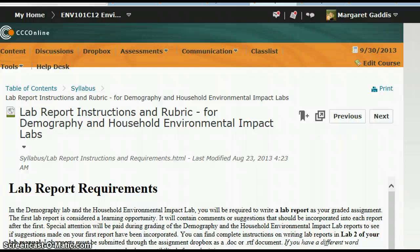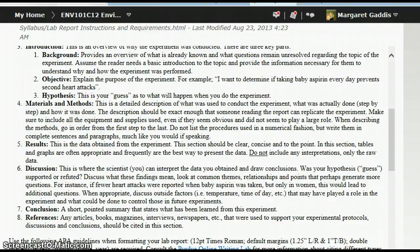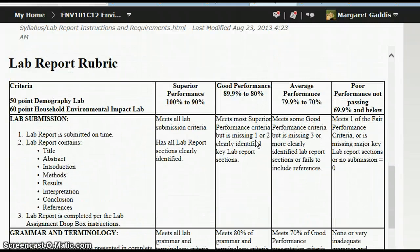Another page you'll find in this area of the syllabus is the lab report requirements and rubric. And it says right here, although I've had several questions about it, you only need to write a lab report for the Demography and Household Environmental Impact Lab now that we have finished the how to write a lab report lab. This page will show you the requirements for writing a lab. So it's a reiteration of that lab we just finished. And here is a rubric just for the Demography and Household Environmental Impact Lab. You do not need to write a lab report for your regular lab assignments.